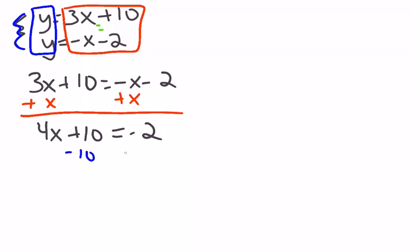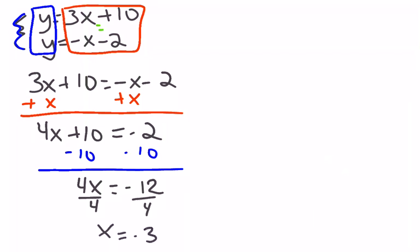So minus 10 from both sides, same signs add and keep the signs, so that's going to be 2 plus 10 is 12, and keep the negative. I have 4x, and last step is to divide by 4 on both sides, so I get x equals negative 3.